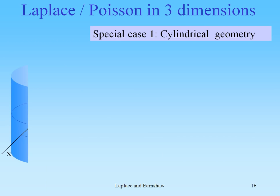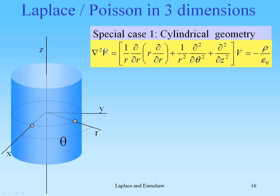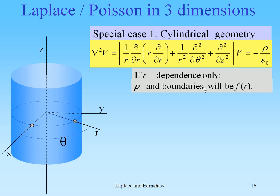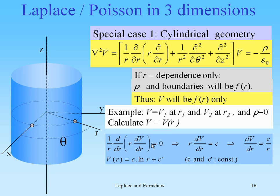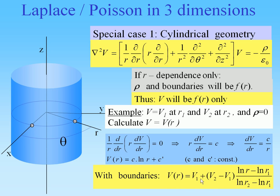First special case: cylindrical geometry. This is the Laplace equation in cylindrical coordinates with R, theta, and z. If there is R-dependence only, then rho and the boundaries are functions of R, and V will be a function of R only. For example, V equals V1 at R equals R1 and V equals V2 at R equals R2, with rho equals zero. Integrating, the potential turns out to be logarithmic: V(R) equals V1 plus (V2 minus V1) times (log R minus log R1) over (log R2 minus log R1).